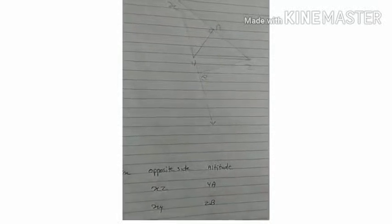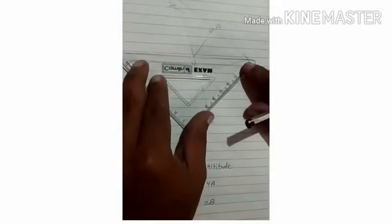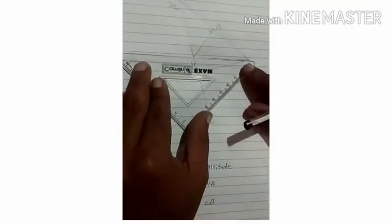Similarly, we have to draw perpendicular from X on Y, Z. As X is going out of the scope or reach of the line Y, Z, I have to extend the line segment Y, Z. So let's extend it.